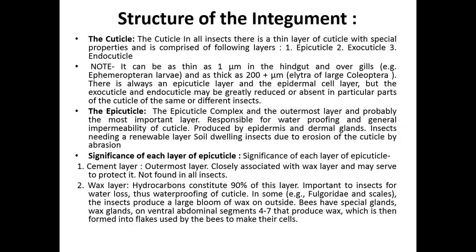The epicuticle has five to six layers. The cement layer is the outermost layer, closely associated with the wax layer and may serve to protect it. It is not found in all insects — its presence may relate to erosion resistance.